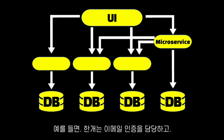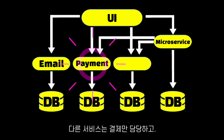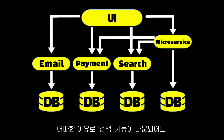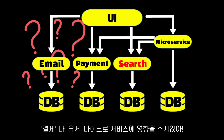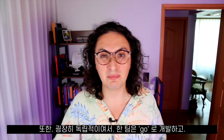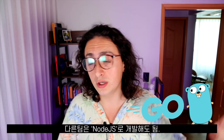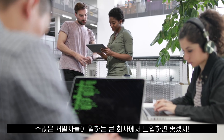For example, one microservice could be in charge of email verification, another one handles payments only, and another one handles the search bar. If for some reason the search microservice crashes, there is no reason why the payment or the user microservice will crash. Also, you can have one team building a microservice in Go and another team building a microservice in Node.js, which is really cool for a big organization with a lot of developers.